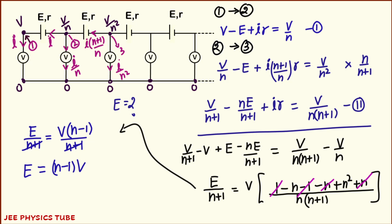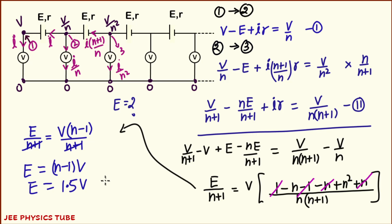So we get the value of E as (N minus 1) times V. Now we know V is 15 volt and N is 1.1, so E equals 0.1 times 15, which is 1.5 volt. The EMF of these identical batteries is 1.5 volt, and that is our answer.